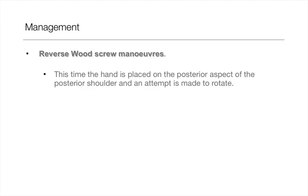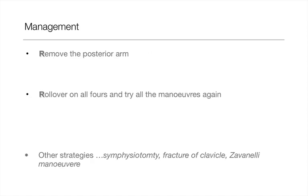If this fails, you can do a reverse Woodscrew's manoeuvre — your hand is placed on the posterior aspect of the posterior shoulder and an attempt is made to rotate the other way. You can also try removing the posterior arm. You can then get the lady to roll over on all fours and try all these manoeuvres again. Other strategies used in the past include fracture of the clavicle and the Zavanelli manoeuvre, which involves pushing the baby back in and attempting a C-section.